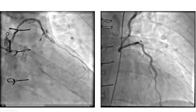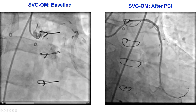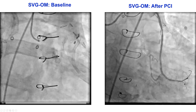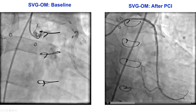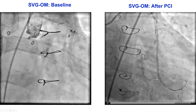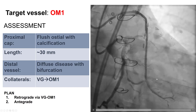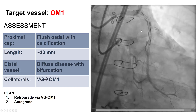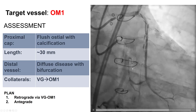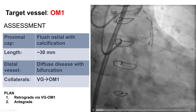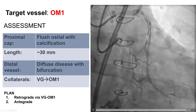A vein graft to the diagonal was patent as was the LIMA to the LAD. However, the culprit vessel was the saphenous vein graft to the obtuse marginal, which was successfully recanalized after multiple rounds of thrombectomy and balloon angioplasty. The patient continued to have worsening angina, and when he came back two months later, there was already significant 90% restenosis within the saphenous vein graft.